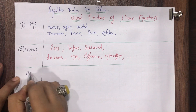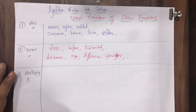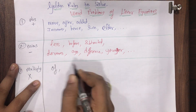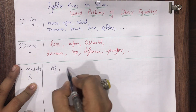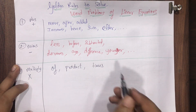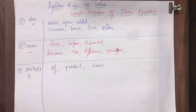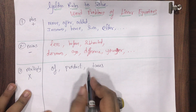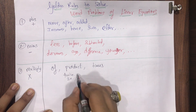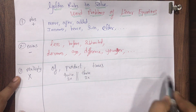For multiplication, the third pointer: whenever you come across the word 'of', decode it as multiply. 'Product' means multiply. 'Times' means multiply. Also, 'twice' means two multiplied by, and 'thrice' means three multiplied by. These are the scenarios for multiplication.